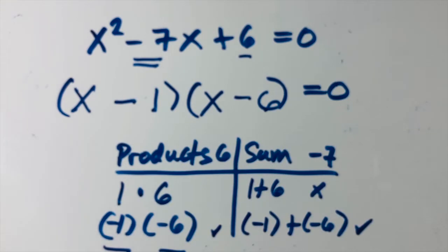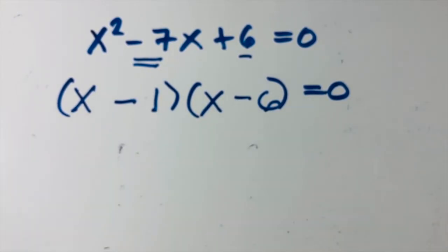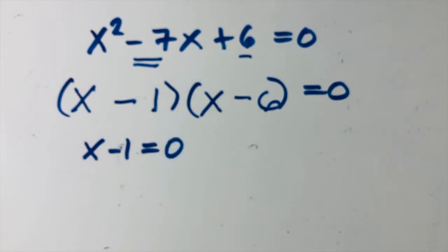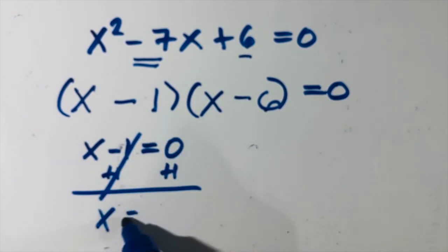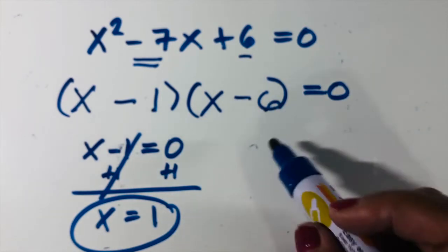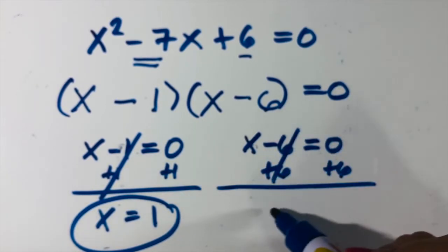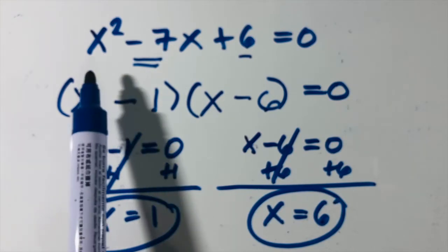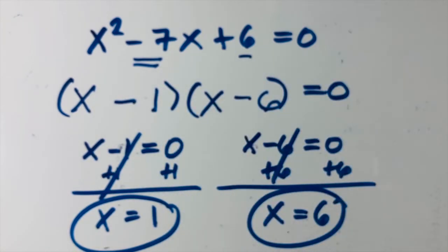The factors of x squared minus 7x plus 6 are (x minus 1)(x minus 6) equals zero. Set each factor equal to zero: x minus 1 equals zero gives x equals 1; x minus 6 equals zero gives x equals 6. Therefore the solutions of x squared minus 7x plus 6 equals zero are 1 and 6.